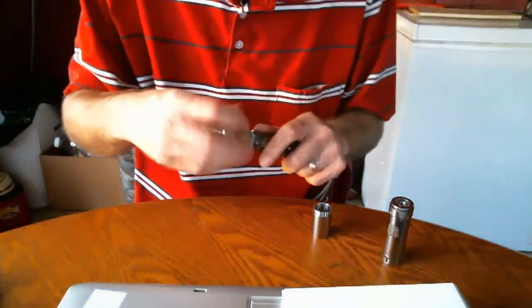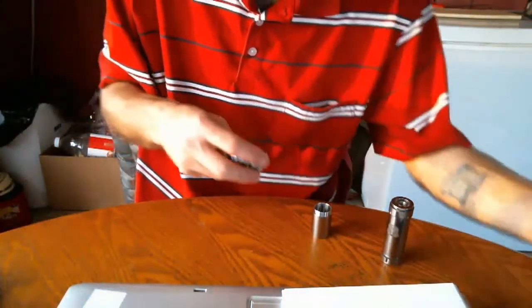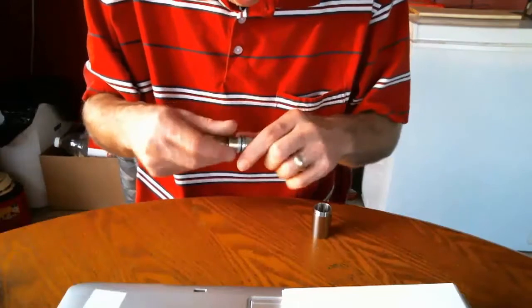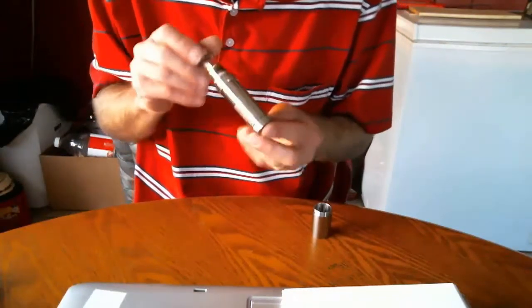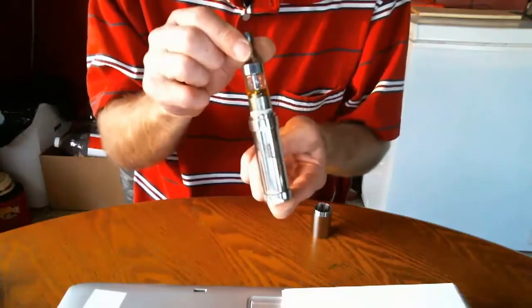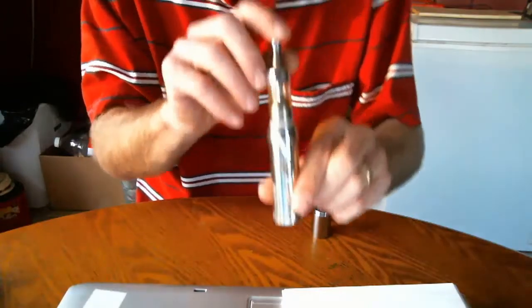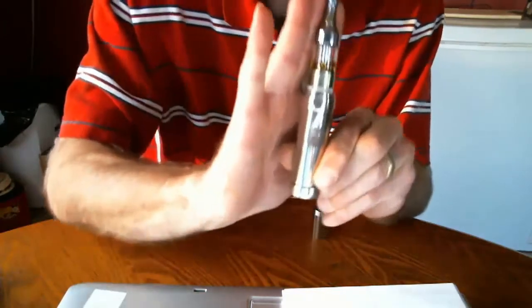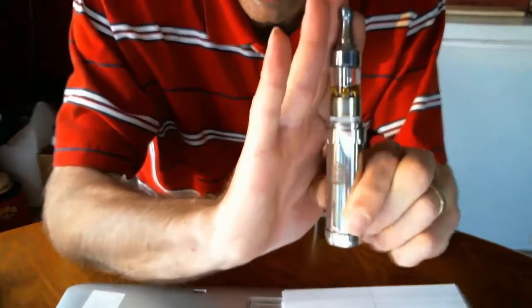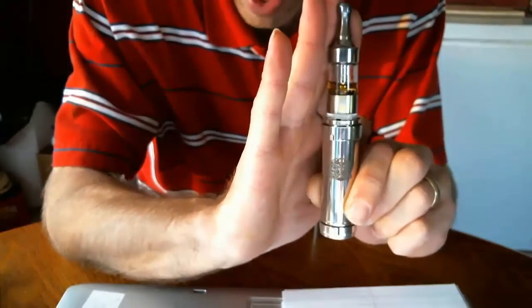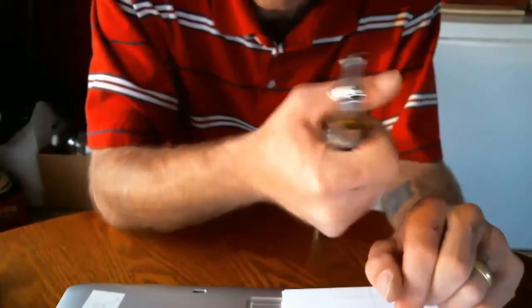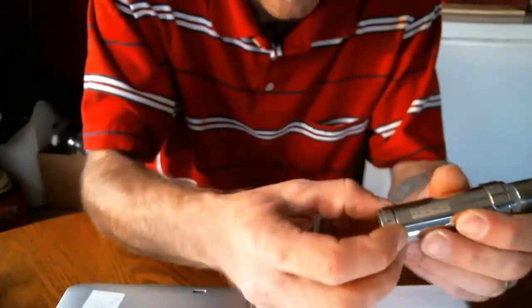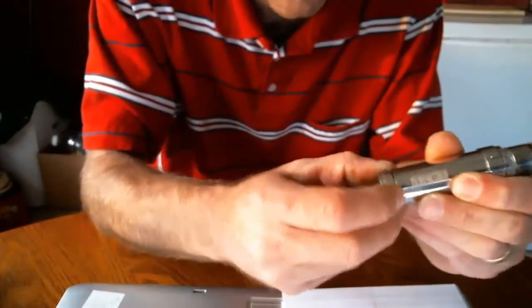I will grab the Pro Tank off the Vamo, put it on the Chi U in 18350 mode. As you can see, that is a very nice stealthy device there, something you can stick in your pocket, carry with you. I mean you can see it fits down in the hand, the only thing showing is the tank. Go ahead and unlock it and give her a fire.